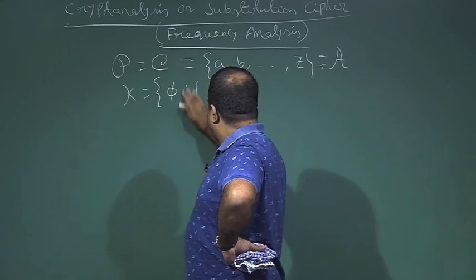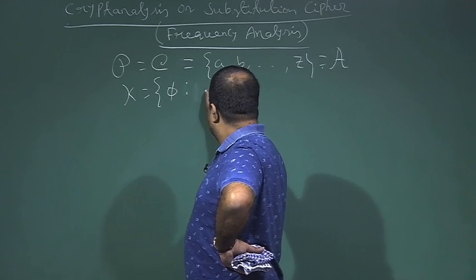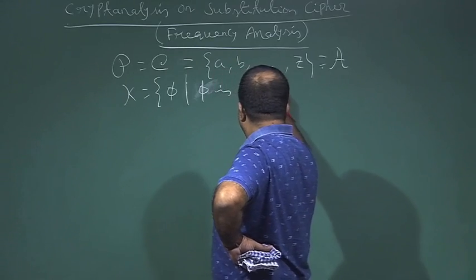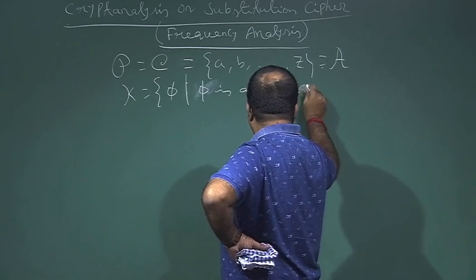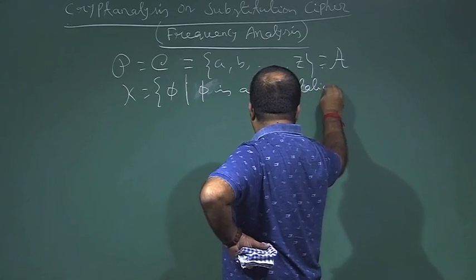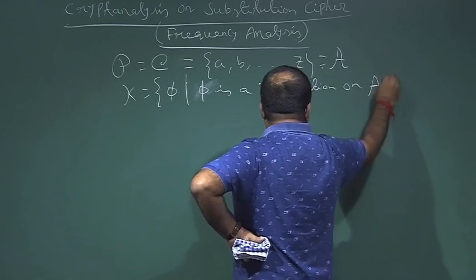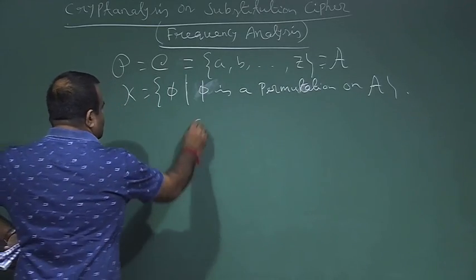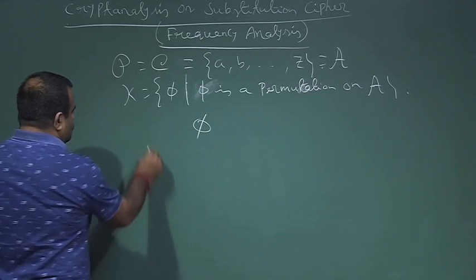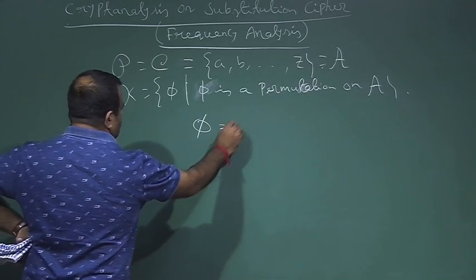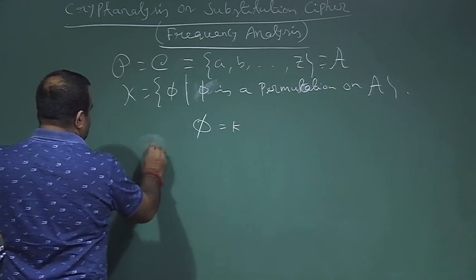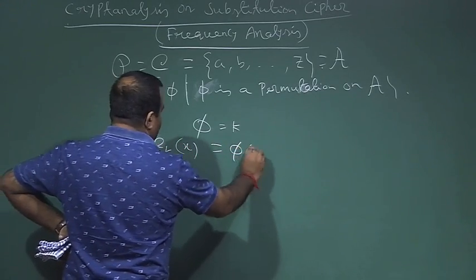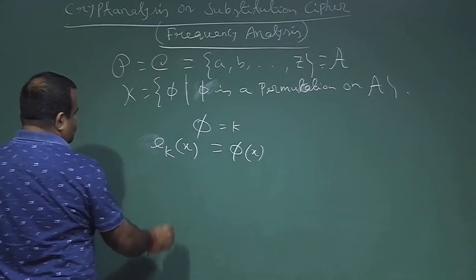The key space is basically the set of all permutations — φ is a permutation on A. It is basically a bijective mapping from A to A. If we take a permutation as the key, then encryption e_k(x) where x is an alphabet is basically φ(x).